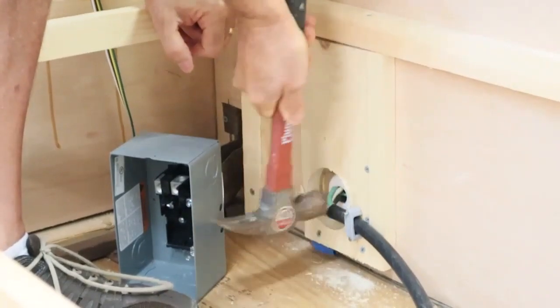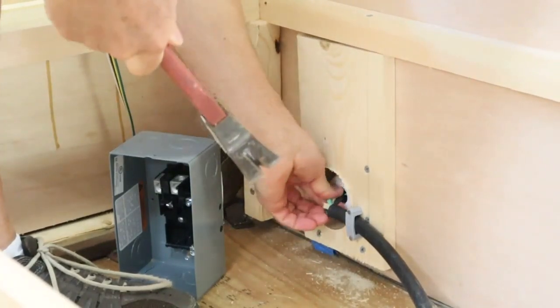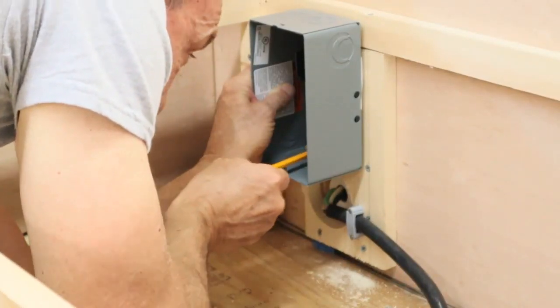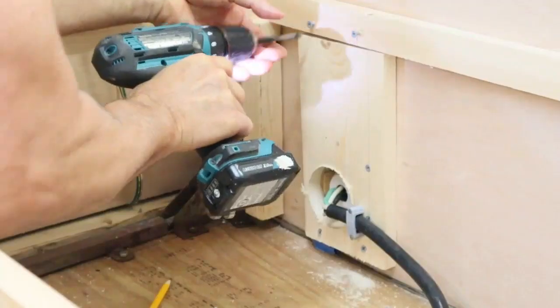Now I'm hammering a clamp over the wire to provide some strain relief for the wire. Next, I hold my breaker box up in the location where I want it and mark the screw holes with a pencil. Then I drove two screws in at the top to hold the box in place.